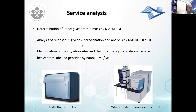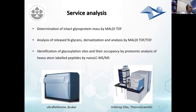Within the INSTRUCT service, what we can offer is this list of mass spectrometry analyses that include: determination of intact glycoprotein mass by MALDI; analysis of released glycans, their derivatization and analysis by MALDI-TOF and TOF-TOF; and identification of glycosylation sites and their relative occupancy by proteomic approaches and heavy atom labeling by nano-LC-MS. For this, we use two principal instruments: MALDI-TOF from Bruker and Orbitrap from Thermo Scientific.